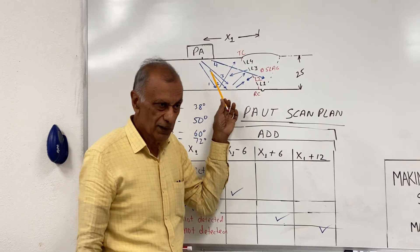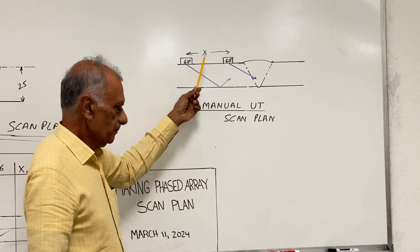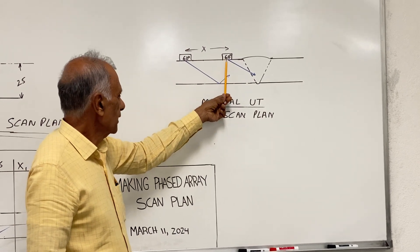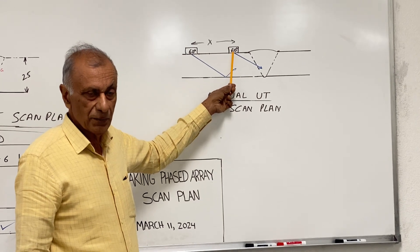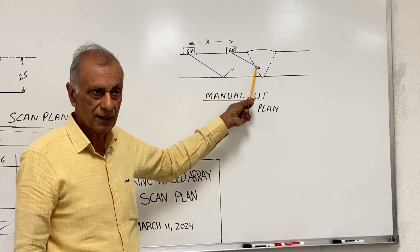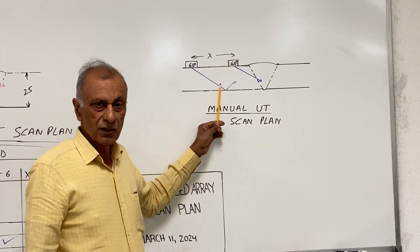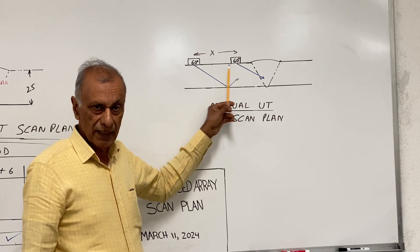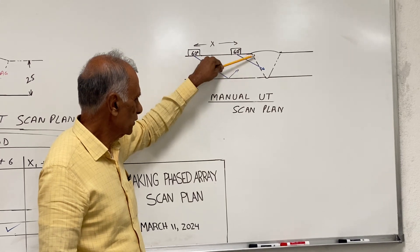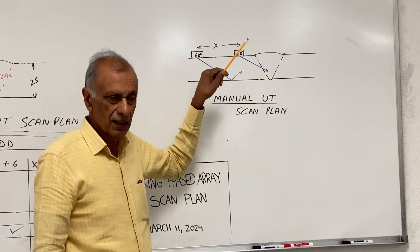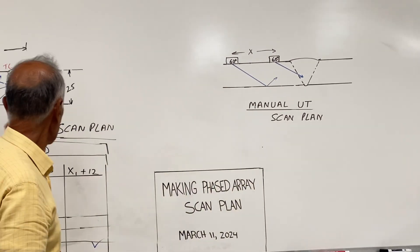If you go to manual UT, remember in manual UT when we did manual UT with 60 degrees or any other angle, we don't take a scan at one location. We actually move the probe back and forth, so we have full coverage of the weld. So in a way, this is actually a very good scan plan for weld coverage because we are going back and forth, and we are sweeping the beam over the whole fusion phase to see all the lack of fusions. Similarly, in order to get the similar scan plan, we have to do the same thing here.